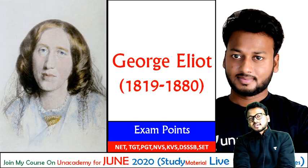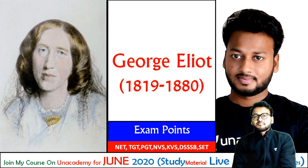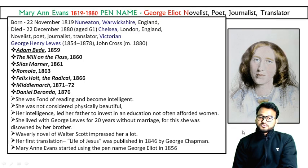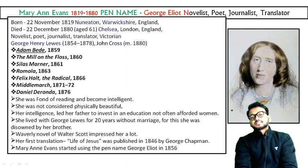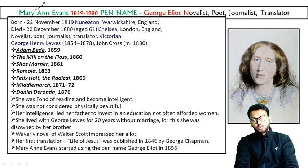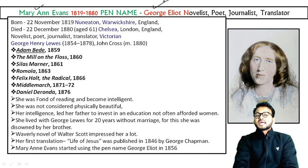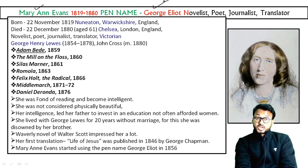As I have already told you, I am going to discuss George Eliot, or you can say Mary Ann Evans. First of all, we must know why we are taking two names for one person. She was born as Mary Ann Evans, and later on she adopted the name George Eliot. So George Eliot is the pen name of Mary Ann Evans. She was a wonderful novelist, poet, journalist, and also a translator.